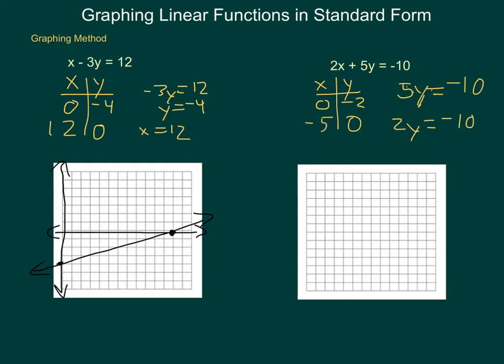Then, going through again, setting up my axes, and then plotting my points, I have 0, negative 2, and I have negative 5, 0. Then, connecting the points, I end up with a graph that looks relatively like that.